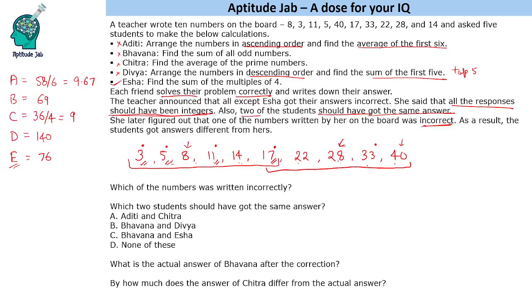The second condition is that two of them should have got the same response. Looking at A's result of 58 divided by 6, we ask: what number, if added, makes it an integer? 60 by 6 is an integer, so we consider what changes could have been made — increasing or decreasing one of the numbers.